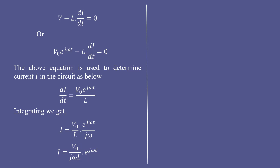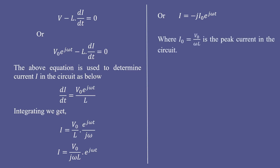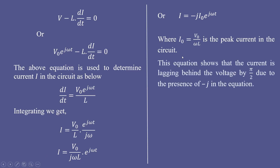We can rewrite this as i = (v₀/ωL) · (−j) · e^(jωt), since 1/j = −j (because j² = −1). Here v₀/ωL is defined as the peak current i₀. The factor −j indicates the current is lagging behind the voltage by π/2, because −j represents a phase of −π/2. Therefore, the current lags the voltage by 90 degrees.